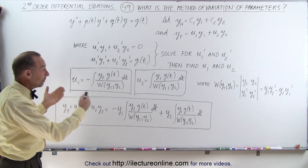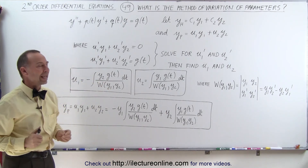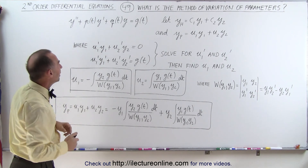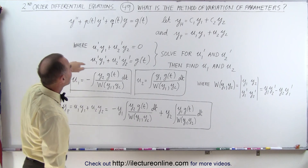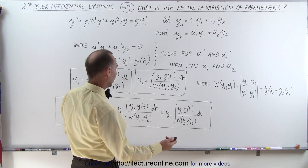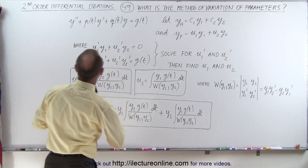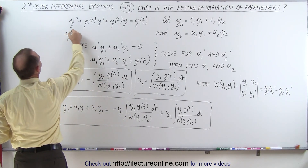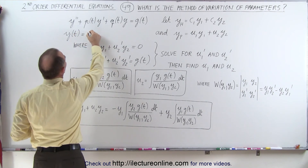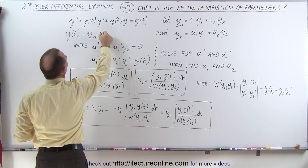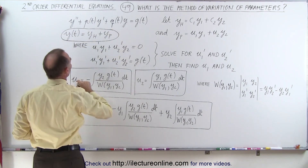Later on we'll show some videos where we actually derive these equations, because it's always good to know where they came from. Essentially, the total solution — y as a function of t — is going to equal the sum of the homogeneous part plus the particular part. This will be the general solution of the differential equation.